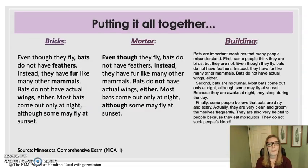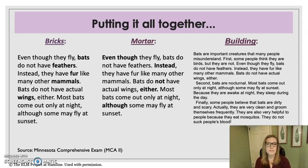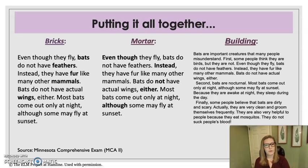Putting it all together: if we take a look at the left-hand column of bricks, we have a selection of text from the Minnesota comprehensive exam about bats, and in this text we have bolded all of the brick-level words that might be considered for explicit instruction. We have words like bats, feathers, fur, mammals, and wings — a pretty typical vocabulary lesson.